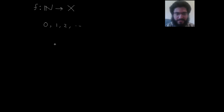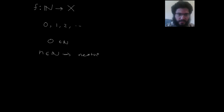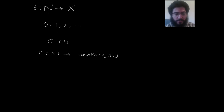So the set of natural numbers consists of zero, and one, and two, and so on. The proper way to say that is: it contains zero, and if it contains n, then it must contain the next of n. So given that description of the domain, how would you describe a function with that domain?